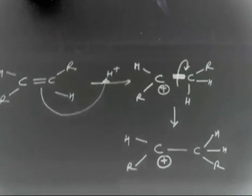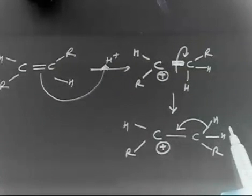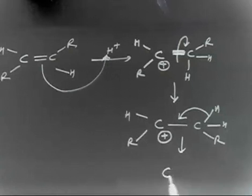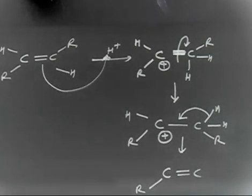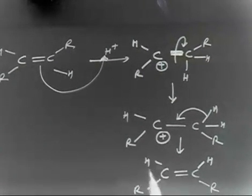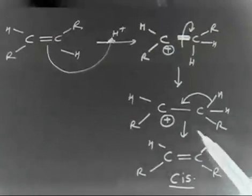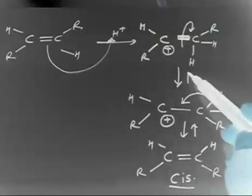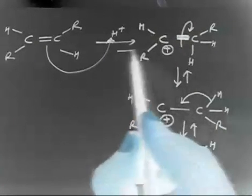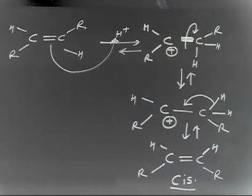In the next step, you can lose H+; basically a base can take H+. If you do that, you convert to the cis form: R and R on the same side, H and H on the same side. So you have converted trans to cis. All these steps are reversible.